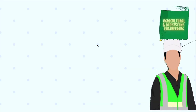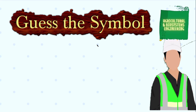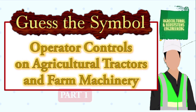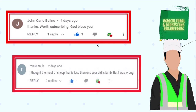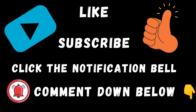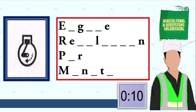Welcome to my channel. This time we will have a game called 'Guess the Symbol.' The symbols I will be showing you are symbols used for operator controls on agricultural tractors and farm machinery. I will give you 10 seconds to answer every symbol. But before we proceed, let us first have our shout out to John Carl Bellino, also to Ronelo Anna — thank you for taking time to visit my channel. If you want to be one of our shout outs in my next video, don't forget to like, subscribe, and comment on any of my videos. We begin with this symbol — your 10 seconds starts now.